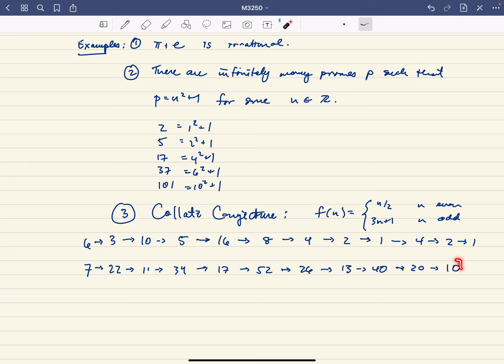10. And then once we get to 10, we can kind of just hook back up with what we had before. We know that we're eventually going to get down to 1. So this will give us 10. And then from there, 10, 5, 16.